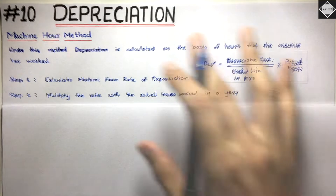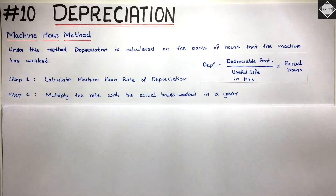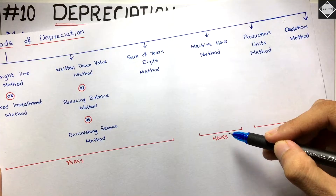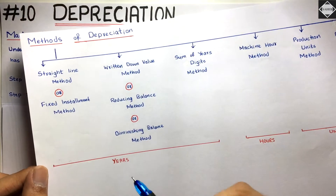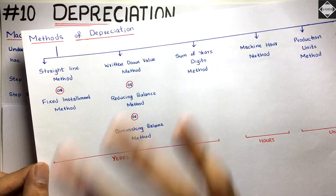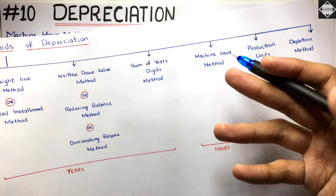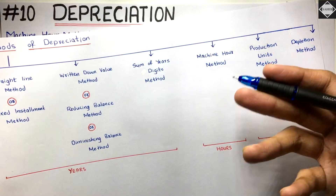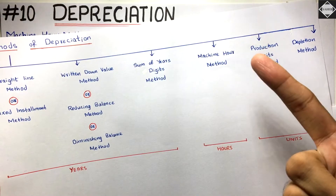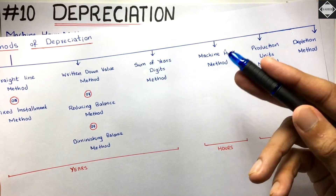Let's see how simple the Machine Hour Method is. The first thing to understand is that in this method, the useful life of the machinery is expressed in the form of hours. In previous methods, the useful life was in years — machinery would last for five years, ten years, fifty years. Here it's different. This method is mainly for machines, and the life will be given as: Machine A would last for 20,000 hours, Machine B would last for 30,000 hours.